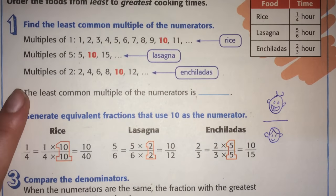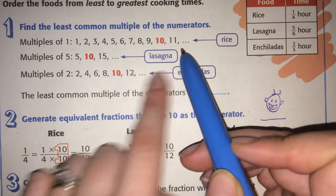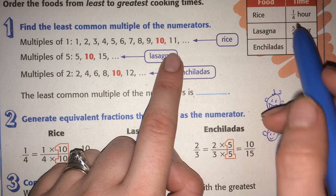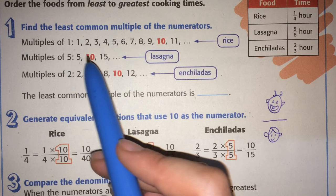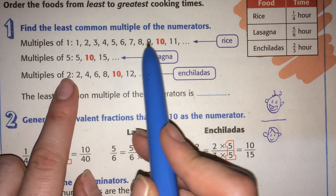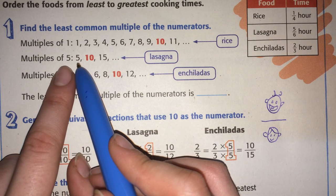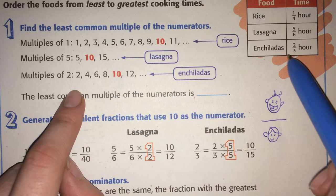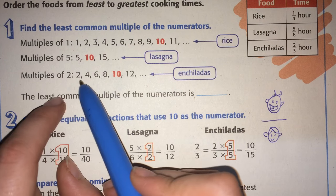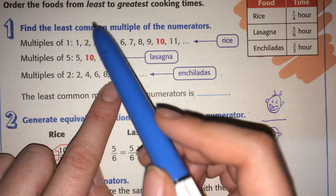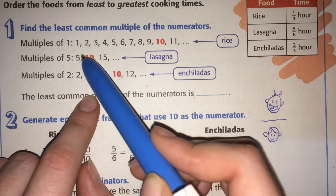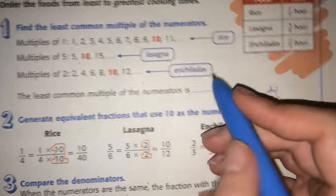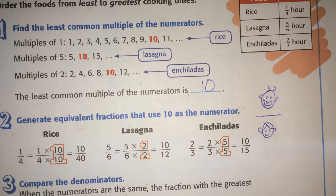So the least common multiple, multiples of ten. So we're trying to figure out what we would make the numerator to be. Well, one we can multiply by basically anything. Five, we can do five, ten, fifteen, twenty. And the numerator here, two, two, four, six, eight, ten. So ten's the first thing I got to that they all have in common. So the least common multiple is ten.